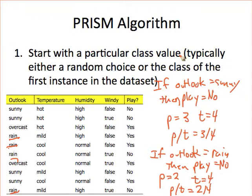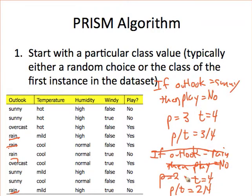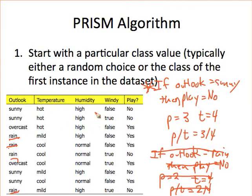Looking at the two outlook rules: if outlook equals sunny then play equals NO, and if outlook equals rain then play equals NO. Writing down the positive examples and support of the antecedent for each: outlook=sunny is 75% accurate, while outlook=rain is only 50%. So rain doesn't make the cut — there's already a better rule. We then consider the remaining rules, like temperature=hot. After comparing all nine possibilities, I can say that one particular rule is the most accurate single-feature rule.